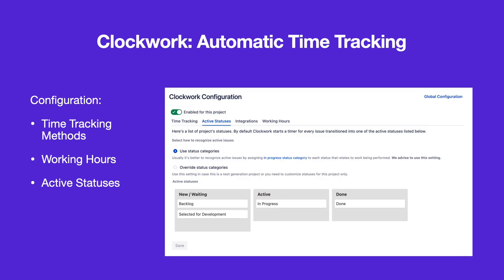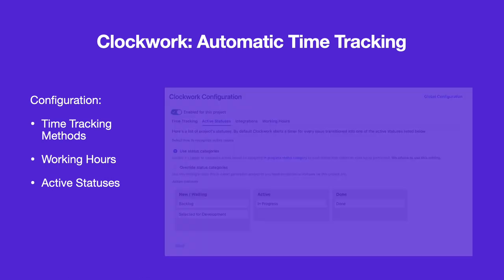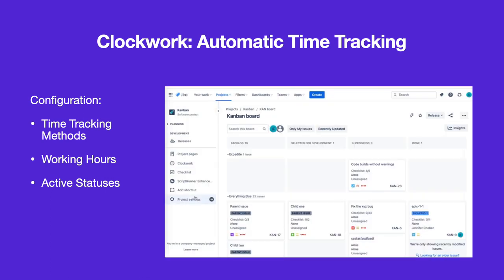Clockwork will start recording time when an assigned issue is transitioned into an active status. By default, any status that is part of the In Progress category will be considered active, but you can customize your active statuses at a global or project level.